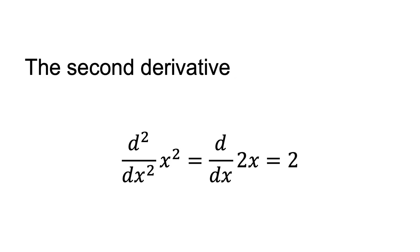For example, if f(x) equals x squared, then d squared/dx squared x squared equals d/dx 2x equals 2. The second derivative is positive, equal to 2, for all values of x. This implies that f(x) equals x squared is increasing at an increasing rate. The function is convex.